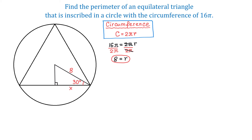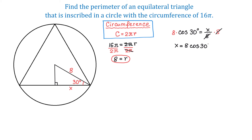In this triangle, cosine of 30 degrees equals the adjacent side x divided by hypotenuse 8. So cosine of 30 degrees equals x divided by 8. To solve for x, we will multiply both sides by 8. On the right side, 8 and 8 will cancel, giving us x equals 8 times cosine of 30 degrees.